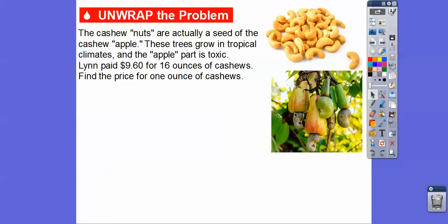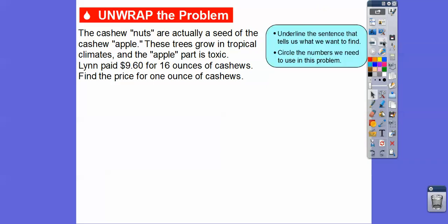Anyway, so in the store, Lynn paid $9.60 for 16 ounces of cashews. Find the price for one ounce of cashew. What we're going to do here is first underline the sentence that tells us what we want to find — that's always this last part: find the unit price for one ounce of cashews. Then circle the numbers that we need to use in this problem — we need $9.60 and 16, so we'll go ahead and circle those.